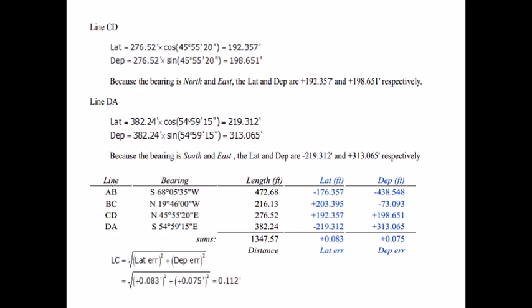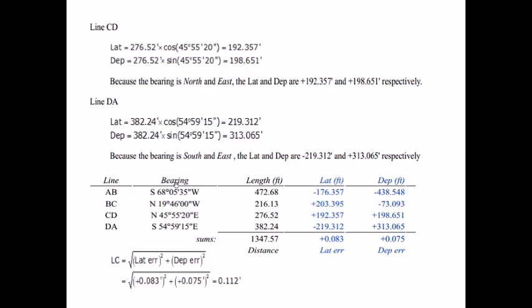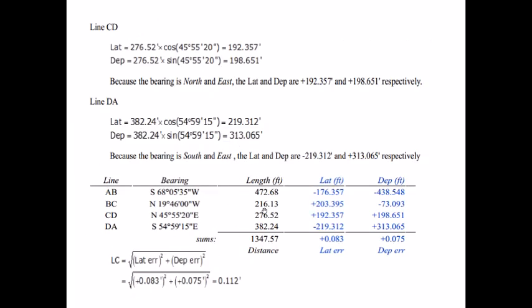Once we have latitudes and departures for all sides, we place the values in our table. The close traverse has four lines: AB, BC, CD, and DA. We represent the bearings given for every line, and then the lengths. When we add up all the lengths, we get the total perimeter of the closed traverse. The units for latitude and departure are the same as for length, because they are orthographic projections of the lengths with direction. The latitudes with relevant signs — positive for north, negative for south — and departures with relevant signs — positive for east, negative for west — are then entered.